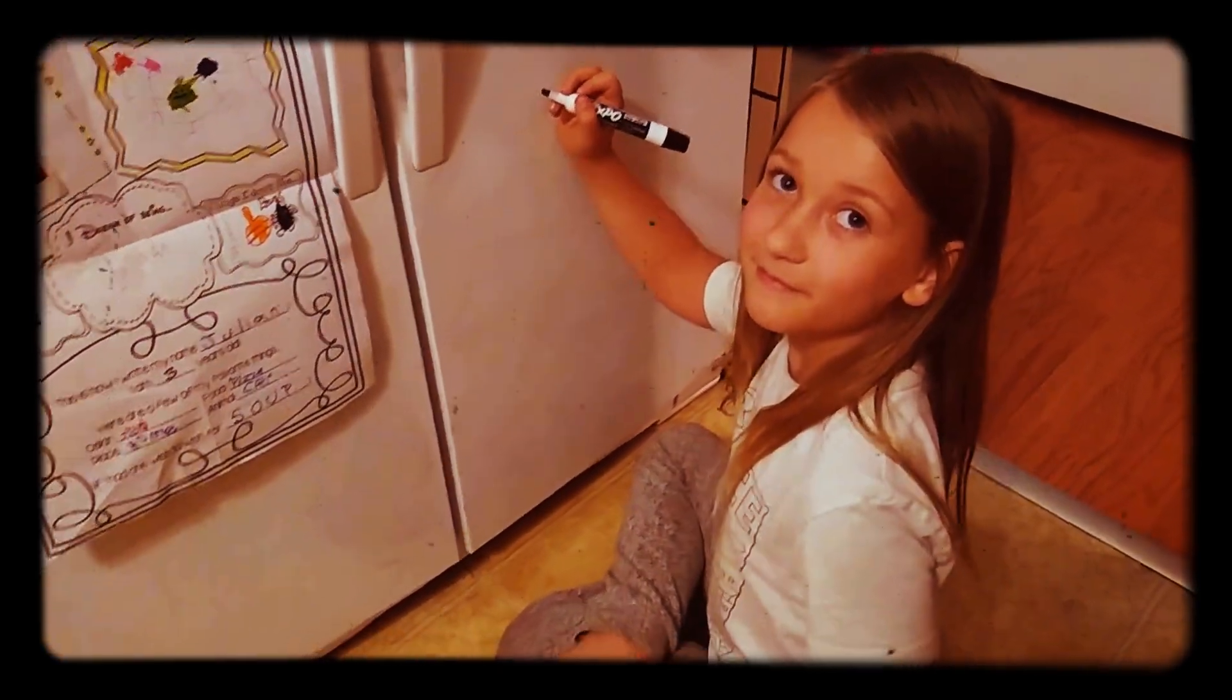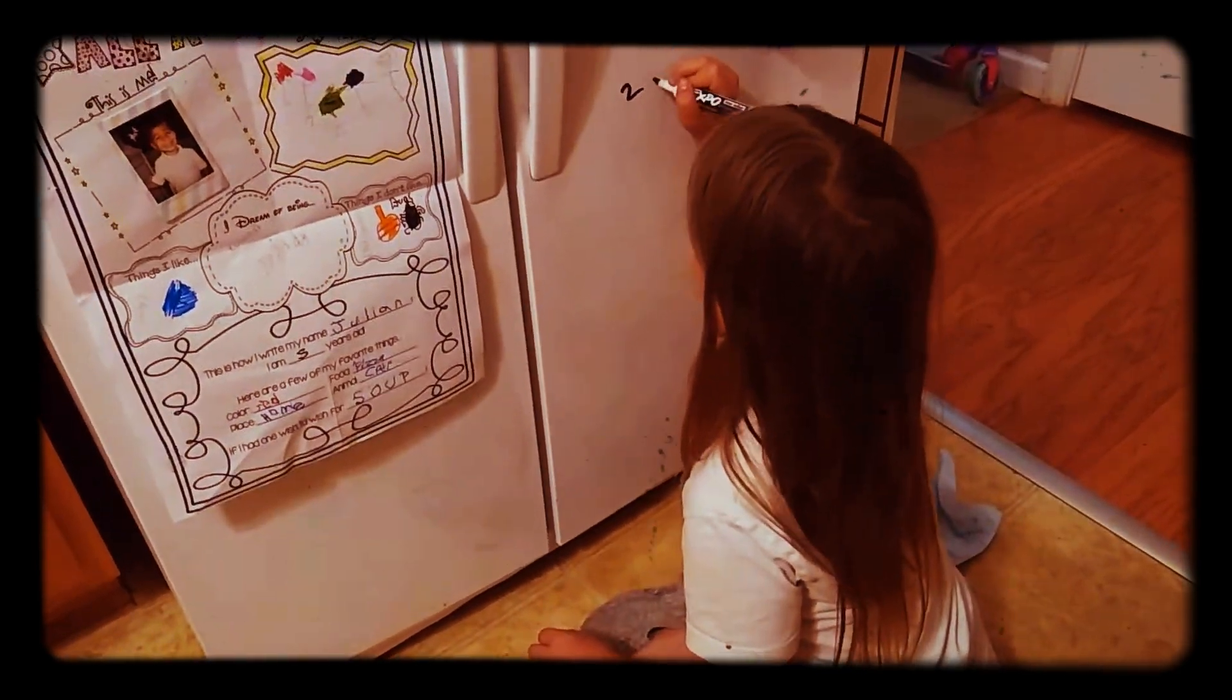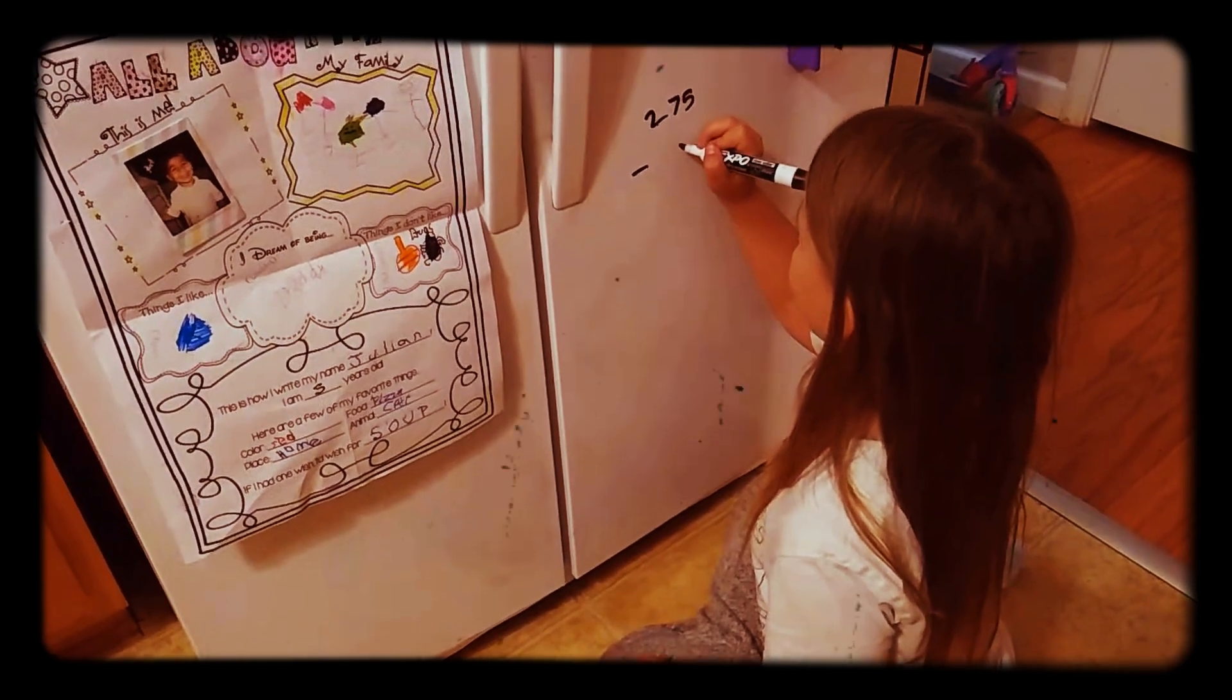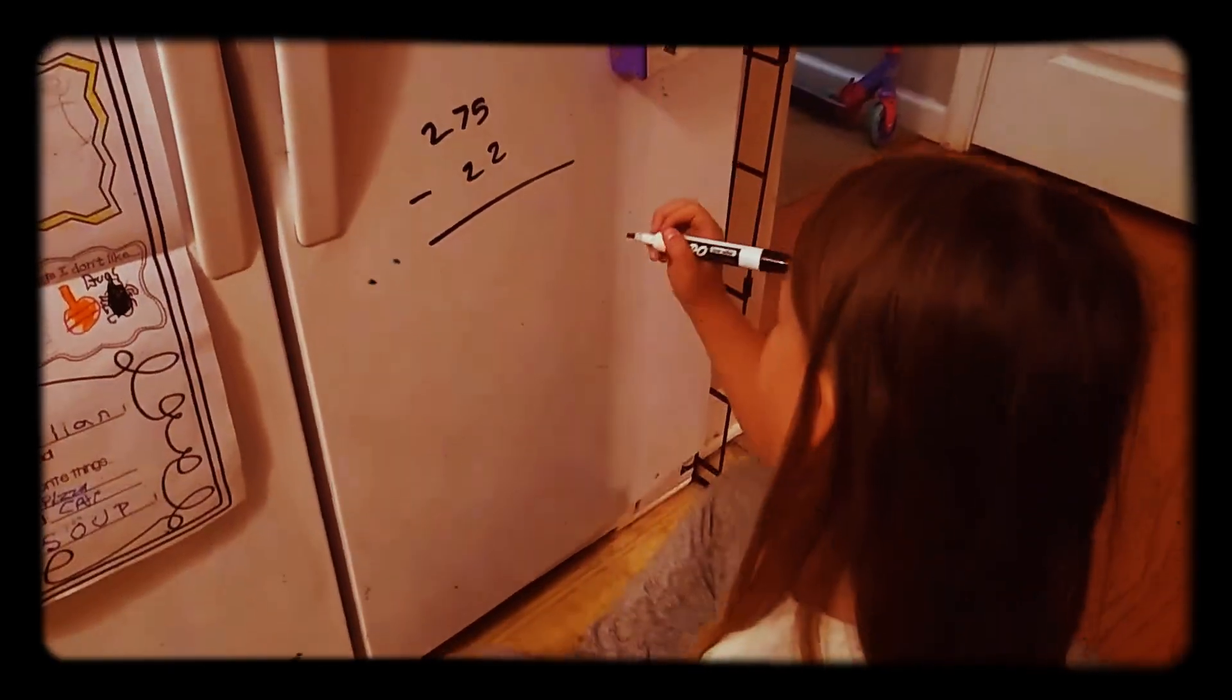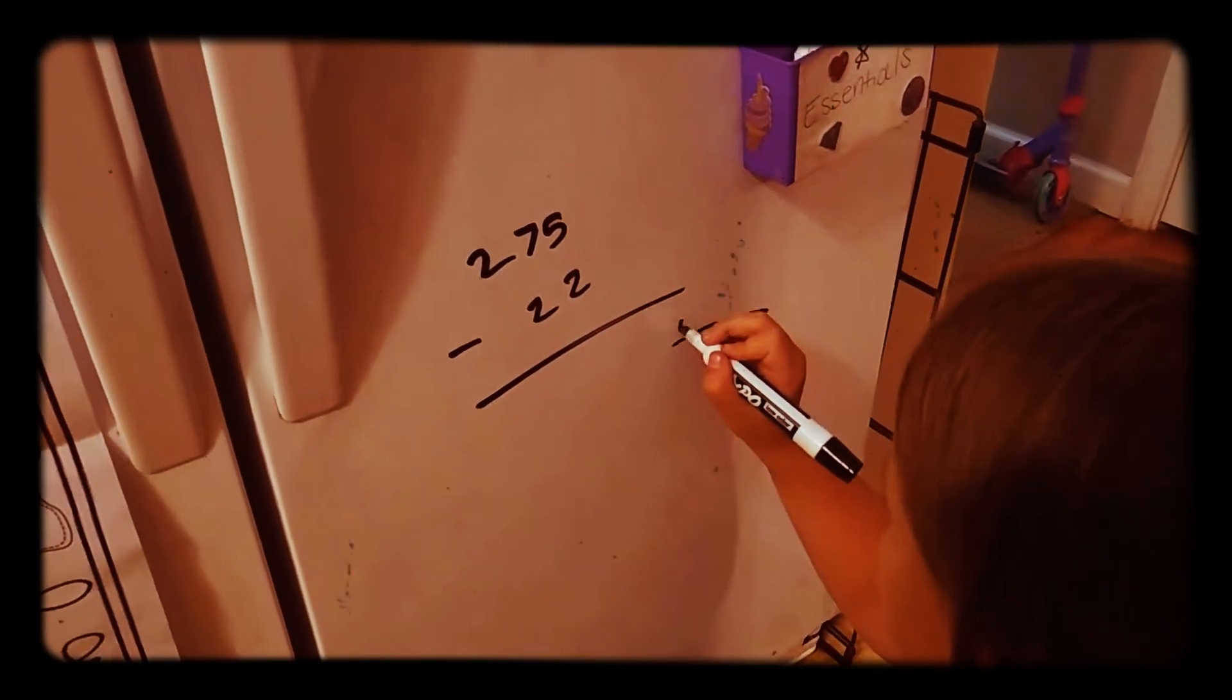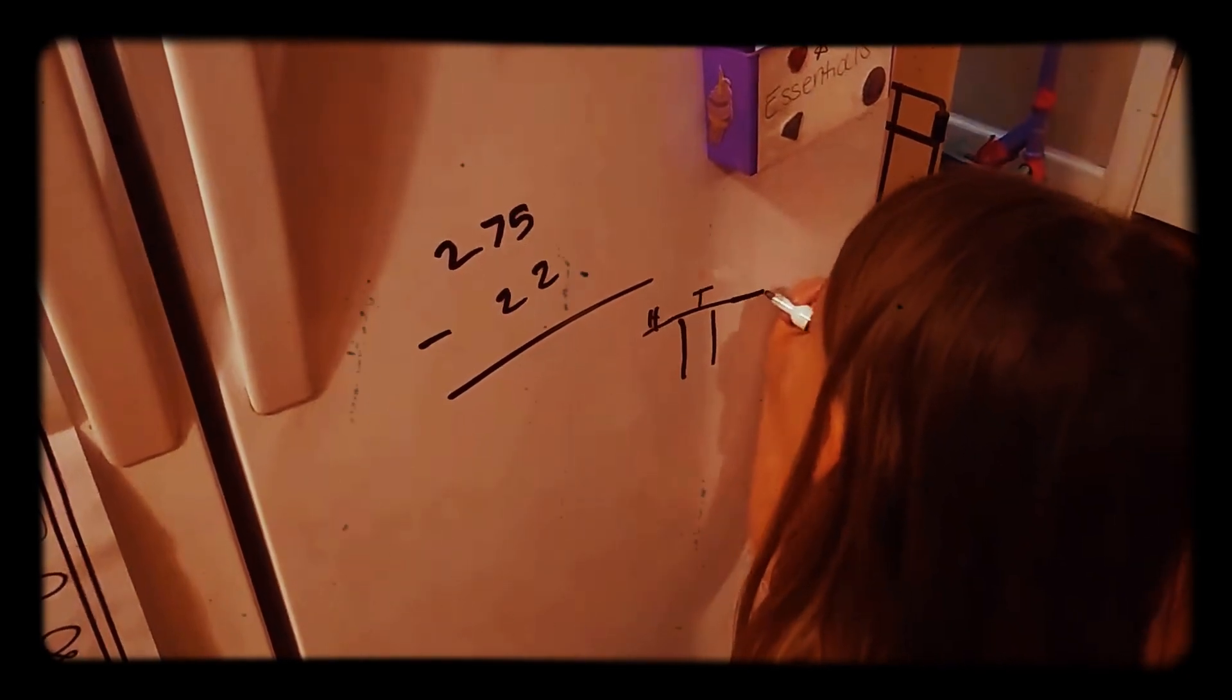All right, Jolene, so let's do the number 275 minus 22. This is how I got... So this is how they're teaching the kids in school right now. Or last year. That's fine.